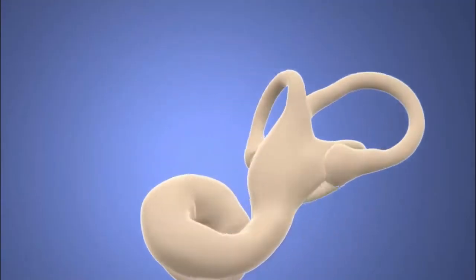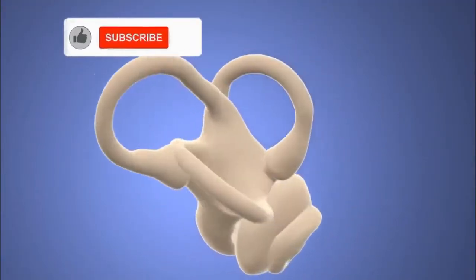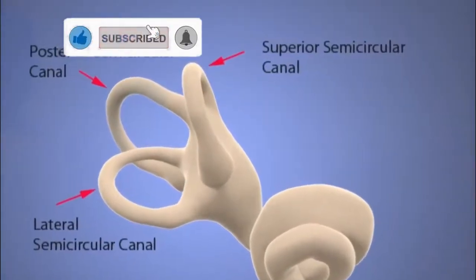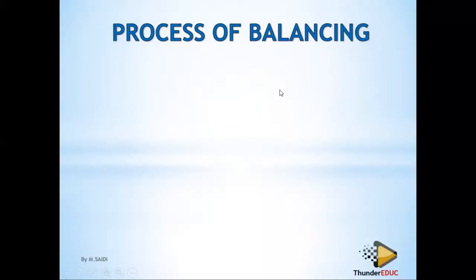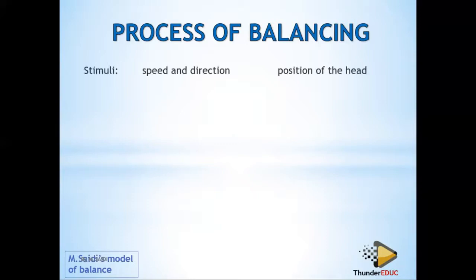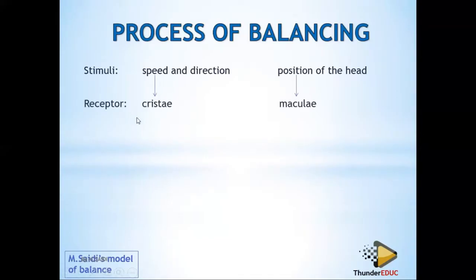Welcome back to our class — don't forget to subscribe if it's your first time visiting our channel. Balancing in the human body: to understand balance, you need to know some key concepts. Number one, there is a stimulus — specifically speed and direction. That is one stimulus. Number two, there is the position of the head — that is another stimulus. You also need to know the receptors, which are the cristae and the maculae.